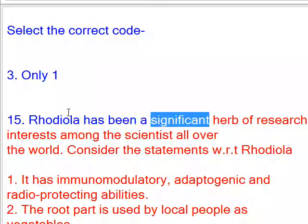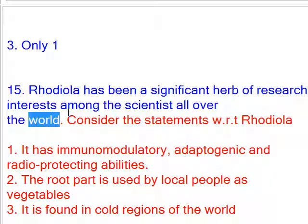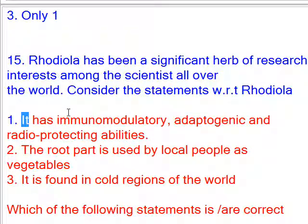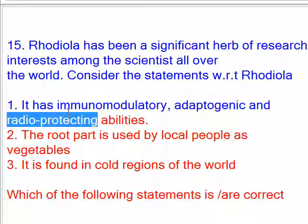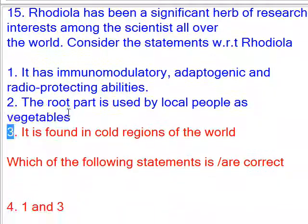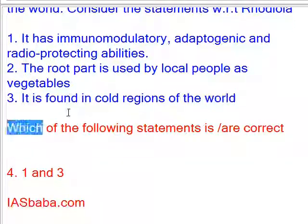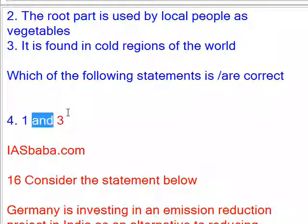Rhodiola has been a significant herb of research interest among scientists all over the world. Consider the statements with respect to Rhodiola: 1. It has immunomodulatory, adaptogenic, and radio-protecting abilities. 2. The root part is used by local people as vegetables. 3. It is found in cold regions of the world. Which of the following statements is/are correct? Answer: 1 and 3.